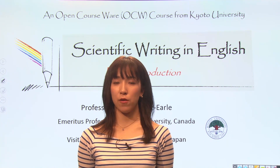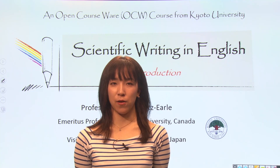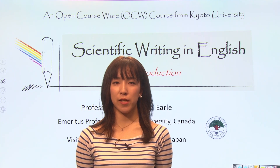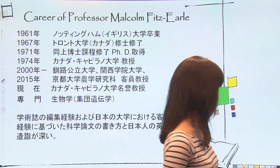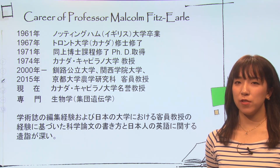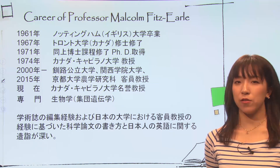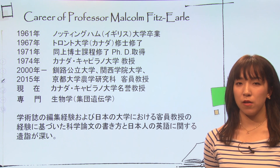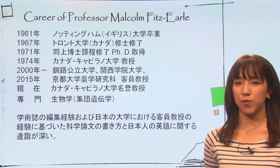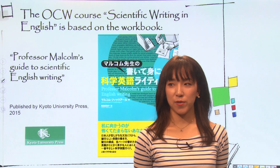This lecture is based on Scientific Writing in English. For more details, please see the workbook. Professor Malcolm has been active as a genetics researcher for over 40 years, has served as a visiting professor at multiple Japanese universities, and has deep expertise in English expressions that Japanese speakers tend to get wrong. Based on his lectures on writing scientific papers in English at Kyoto University, he authored this workbook. It is now time to introduce Professor Malcolm.